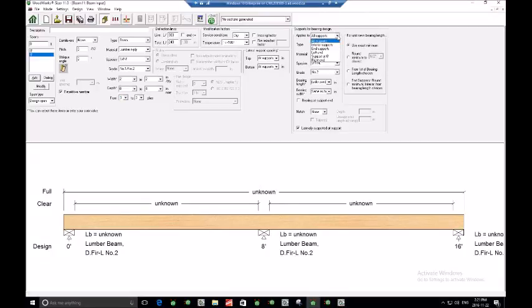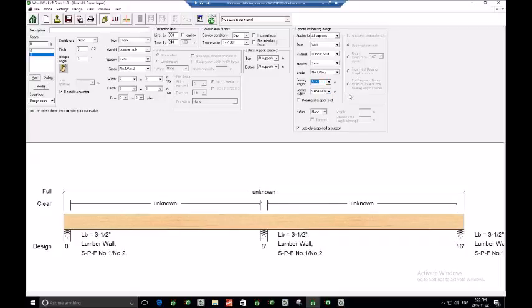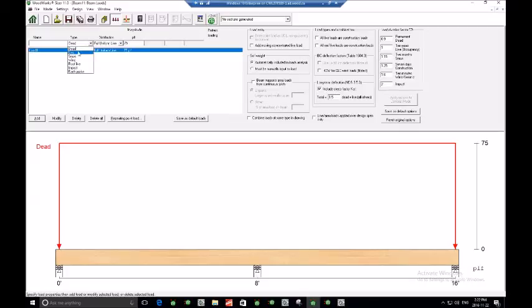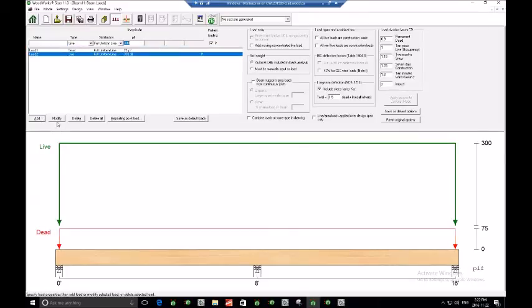So we'll now move on to the load input view. Here we'll add a uniform line load of 75 PLF. We'll add a 300 PLF live load. We'll include self-weight in the analysis, as well as pattern loading. And we'll calculate a long-term deflection following NDS 3.5.2. So we'll run the design.